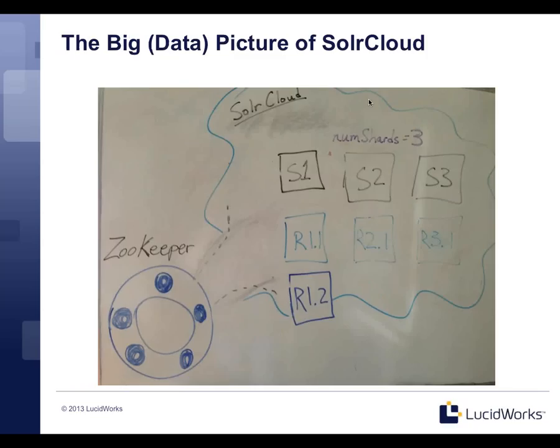The big data picture that Solr Cloud aspires to — and already succeeds at in many production environments — is a magical system where you can continue to toss nodes at it, managed by ZooKeeper, and it dynamically scales. You can add replicas for query capacity, and a new feature in Solr 4.1 also allows you to scale out in terms of the number of shards, giving you dynamic capacity in either direction.